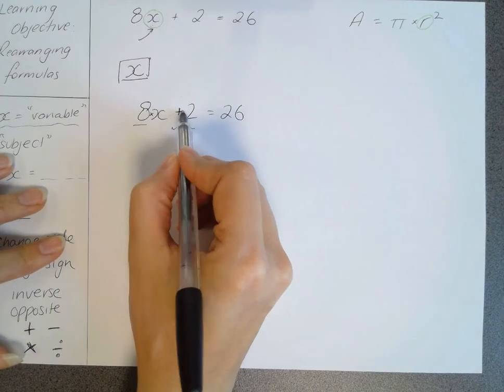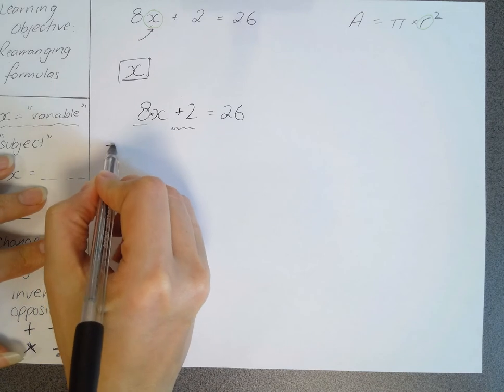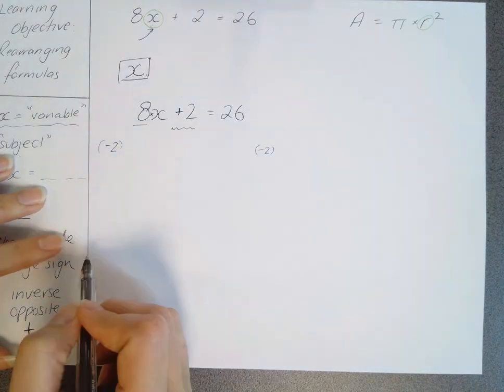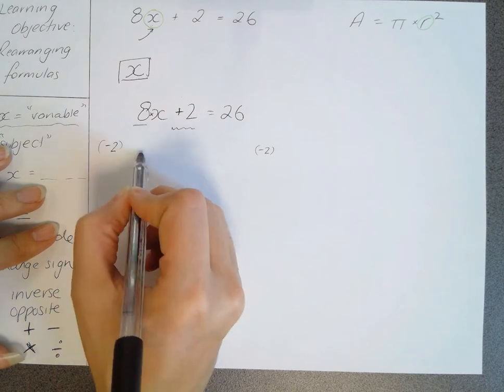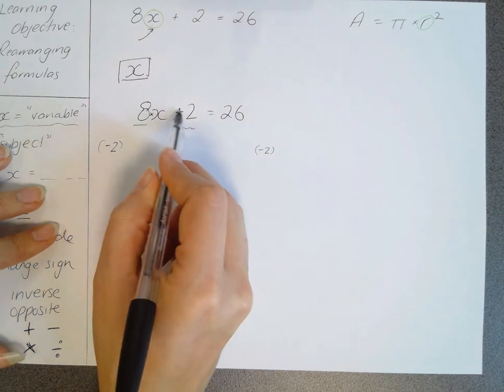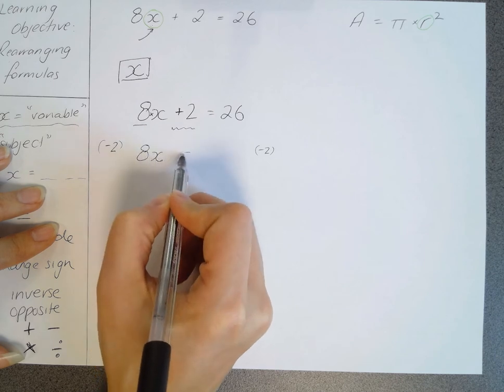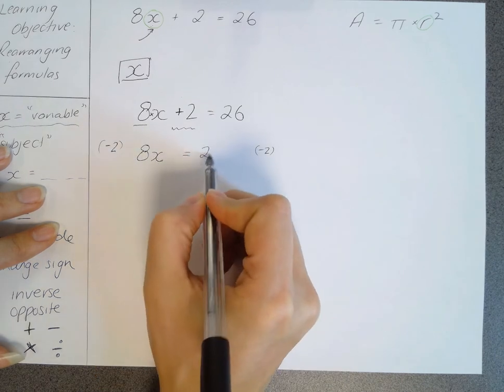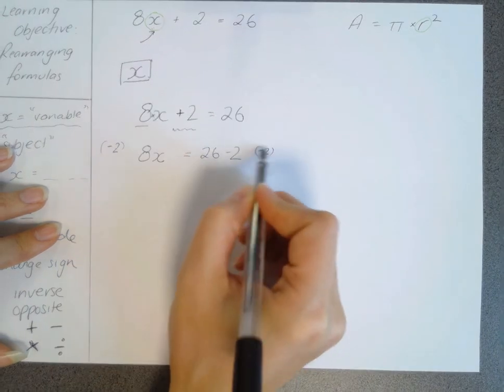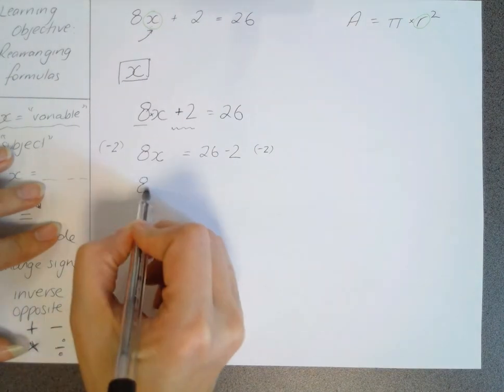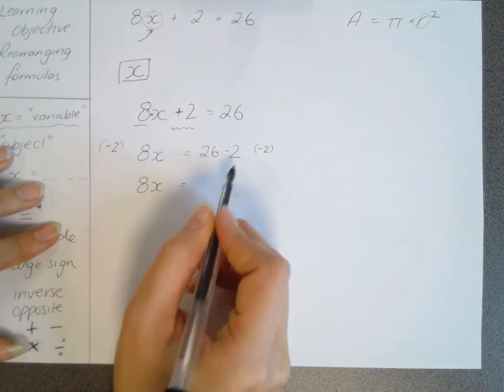If it is a plus 2 over here, what we're going to do is take 2 on each side. We're going to take 2 on each side. So if we have plus 2 take 2, it cancels it out. And on this side, we're left with 8x. And on the other side of the equal sign, we will have 26 take 2. So we will have 8x equals 26 take 2 is 24.